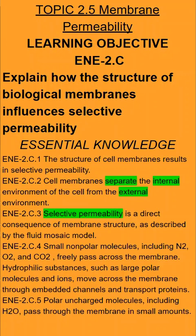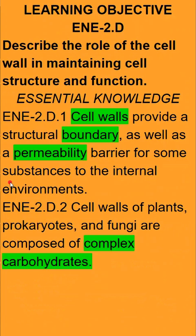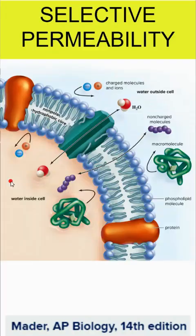Membranes separate internal and external environments and are selectively permeable. Cell walls contain unique complex carbohydrates in plants, prokaryotes, and fungi. When we think about selective permeability, we want to keep things that we want inside and keep things outside that we want to keep outside.